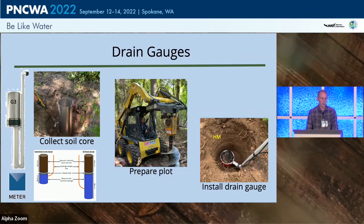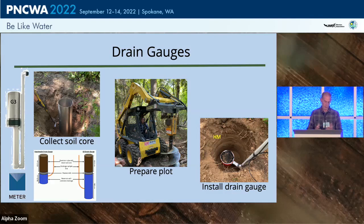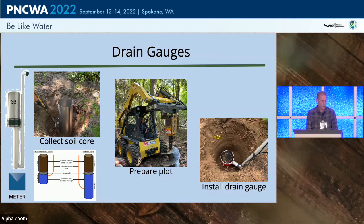To measure drainage, we installed drain gauges consisting of a 10-inch diameter steel cylinder driven into the ground to collect an intact soil core. That intact core is taken to the installation site and the diversion tube is placed on top of a reservoir within a prepared hole, then filled in.